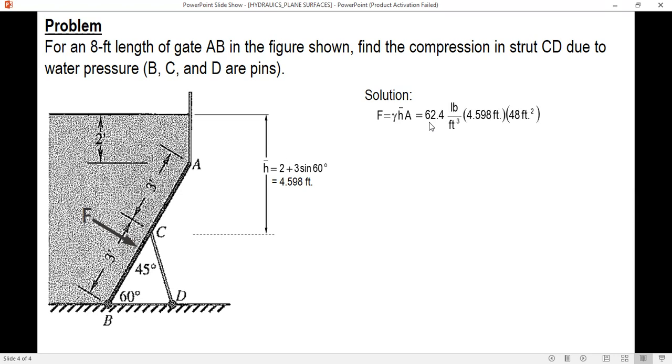The hydrostatic force: gamma of water in English units is 62.4 pounds per cubic feet times h bar. The area is 48, or simply 6 by 8, 8 feet long.